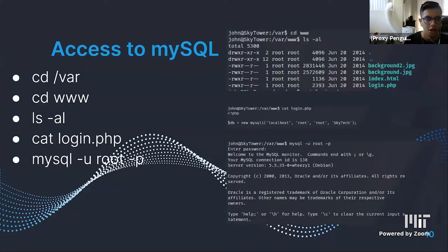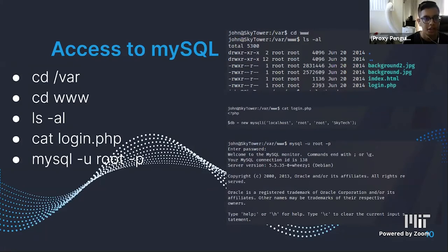Since we used SQL injection to log into the website, we knew the system uses MySQL. We navigated to the /var/www directory — the default root folder of the web server, Sky Tower — and listed all contents with ls -al. We noticed a login.php file and cat'd its contents, finding a root password for MySQL. We logged into MySQL using 'mysql -u root -p.'